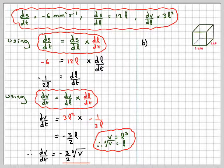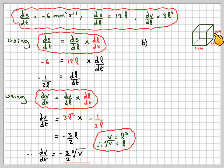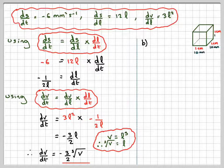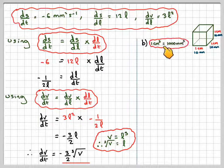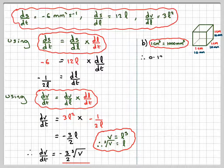Now for part B, if we don't remember what the conversion rate is, if we draw a cube of 1cm by 1cm by 1cm, 1cm is 10mm, so we can say that 1cm cubed is equal to 1000mm cubed.